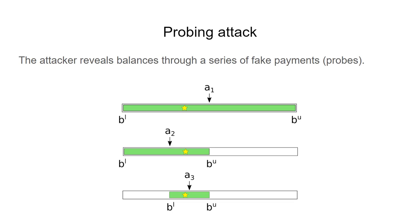So the attacker can do a series of probes with amounts A1, A2, A3, and so on, and divide the colored interval in half every time. And using this binary search, bring the two estimates, BL and BU, of the true balance, closer and closer to the true balance position, which is depicted here by the star.